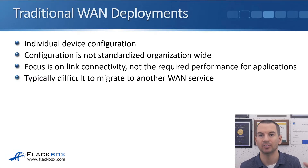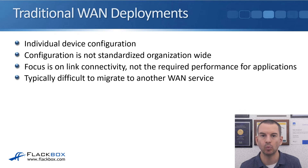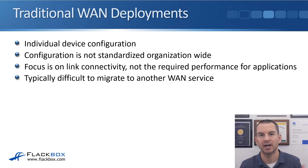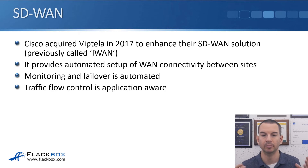In this lecture, you'll learn about SD-WAN, which is part of Cisco's DNA, Digital Network Architecture. Looking at the traditional way to do WAN deployments first: each of those WAN edge routers is going to be configured individually, one at a time, and this leads to the configuration not being standardized organization-wide. The focus is on basic link connectivity, not the required performance for applications. And because we're using particular hardware and configuration tied to a particular service provider in each location, it's typically difficult if we want to migrate to another WAN service.